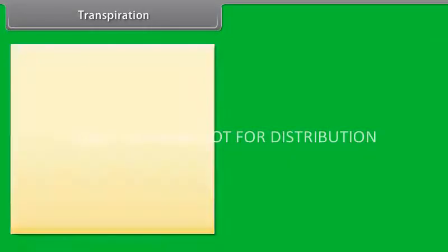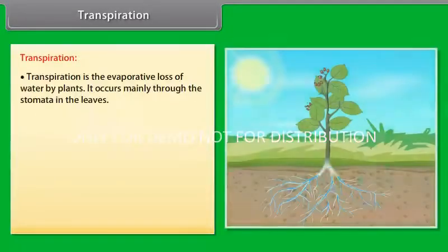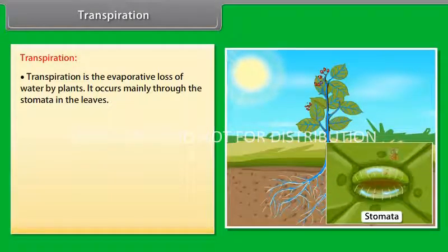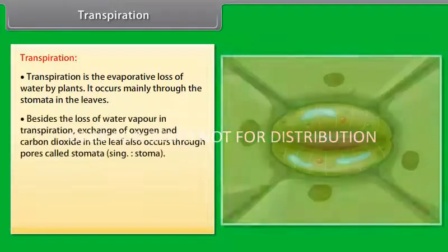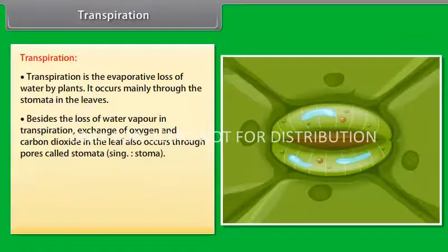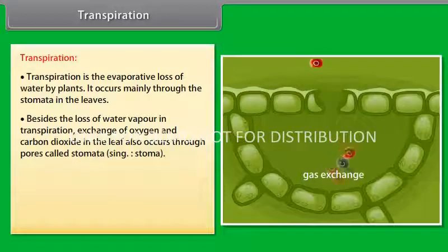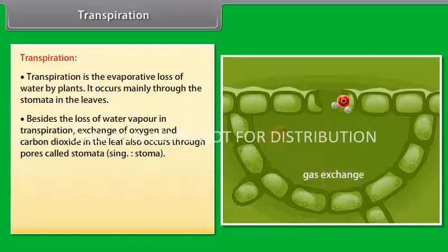Transpiration. So far we have learnt about water flow pathways and related theories. We now move on to the next topic of this module. Transpiration. Transpiration is the evaporative loss of water by plants. It occurs mainly through the stomata in the leaves. Besides the loss of water vapour in transpiration, exchange of oxygen and carbon dioxide in the leaf also occurs through pores called stomata.